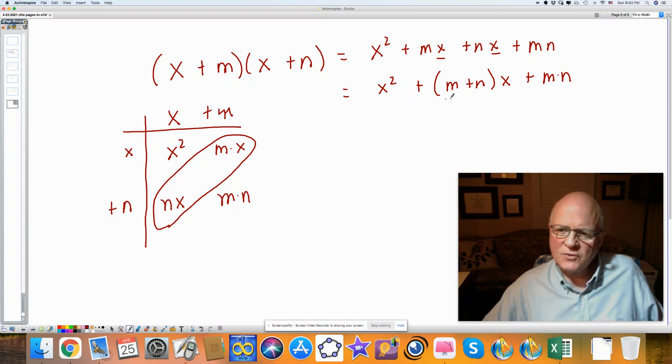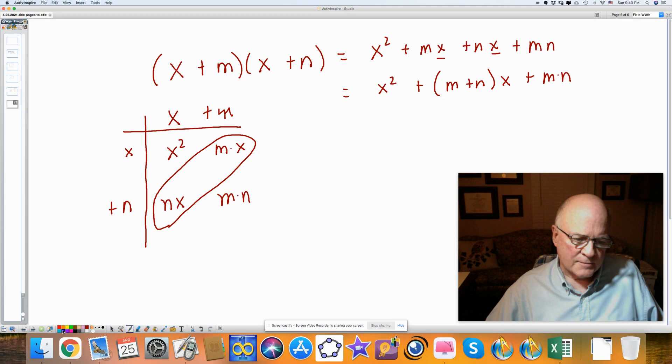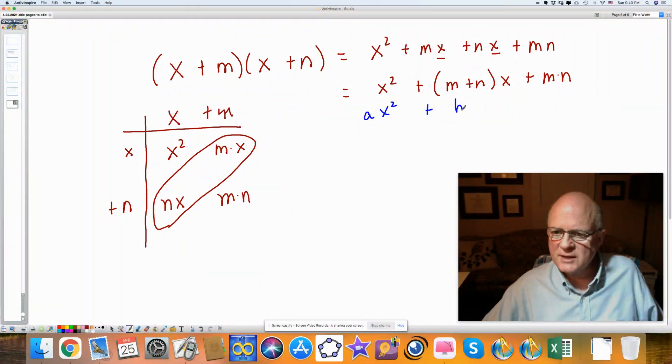And if you'll notice, this equation is in the form of, let me change colors here, ax squared plus bx plus c. So I have these coefficients, a and b, and this constant, c.